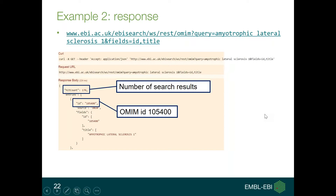The response available in the Swagger page includes what we were looking for: OMIM ID 105400. You can see that we found 170 results, but the first one is the one matching our criteria — it provides the required ID and the title is 'amyotrophic lateral sclerosis 1'.